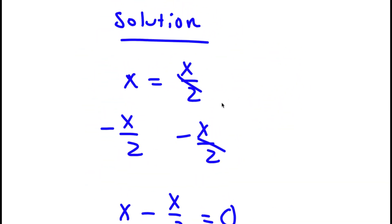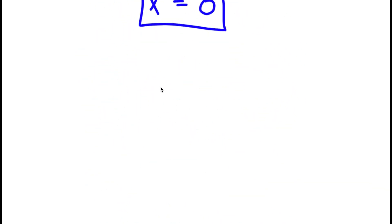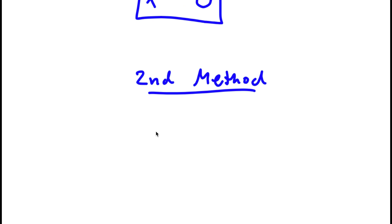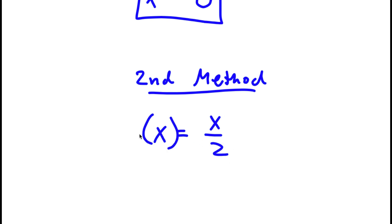Now I actually have a second method of solving this problem. So again, I first start off with x is equal to x over 2. And now this time, instead of subtracting x over 2 on both sides, I'm actually going to multiply 2 on both sides.